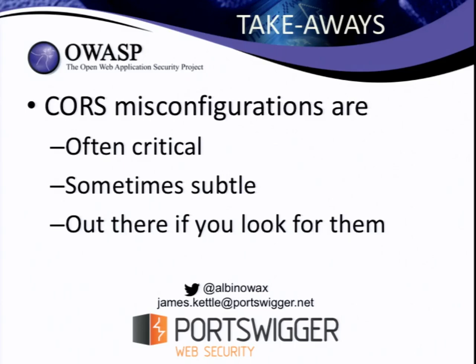Have you seen companies accepting CORS misconfigurations as valid bugs in bug bounty programs? Yes — all of the examples I gave using real sites, including all the Bitcoin examples, I reported those to the sites and they were fixed. The absolute key is just making a proof of concept that demonstrates you can do something really bad — when you say hey, I can use this to steal Bitcoin, they can't say oh, that's not a vulnerability, that's a feature.